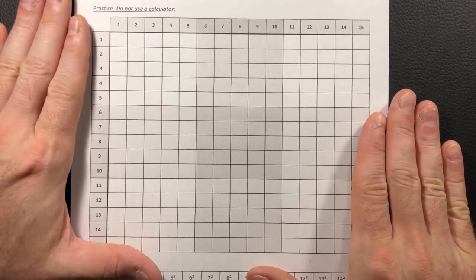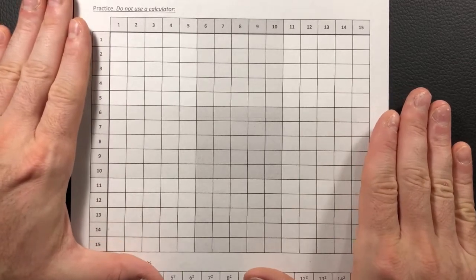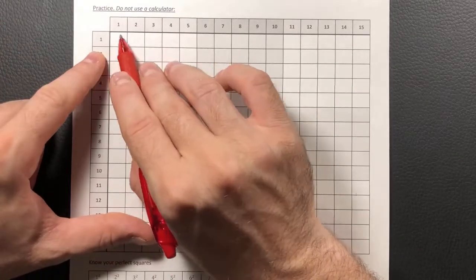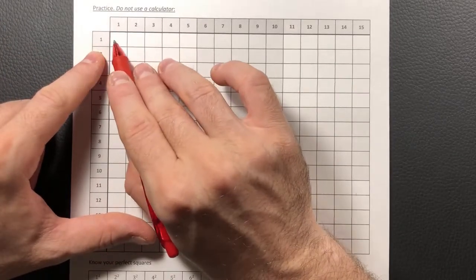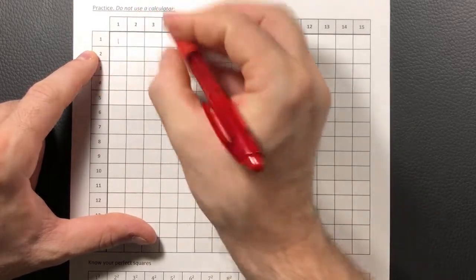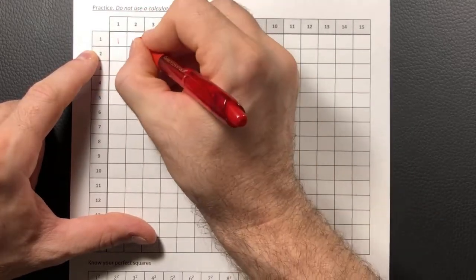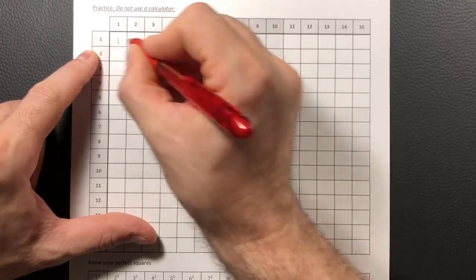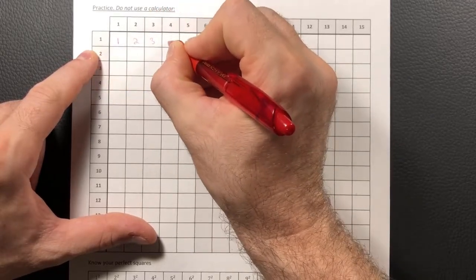If you're unfamiliar with this setup and you've never seen this before, let me walk you through a few of them so that you get the idea. You have a row and you have a column. We're going to take the row and multiply by the column number. So 1 times 1 will give us 1. 1 times 2 will give us 2. 1 times 3 will give us 3. 1 times 4 will give us 4.